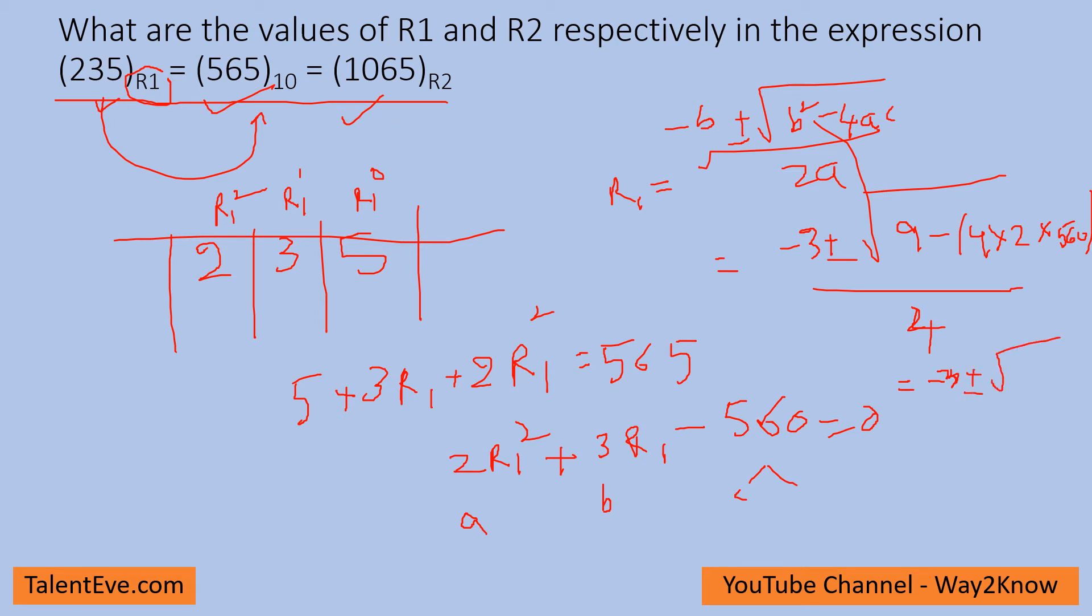This gives minus 3 plus or minus the square root of... 560 into 2 into 4 gives 4480, plus 9, which equals 4489. The square root of 4489 is 67, divided by 4.